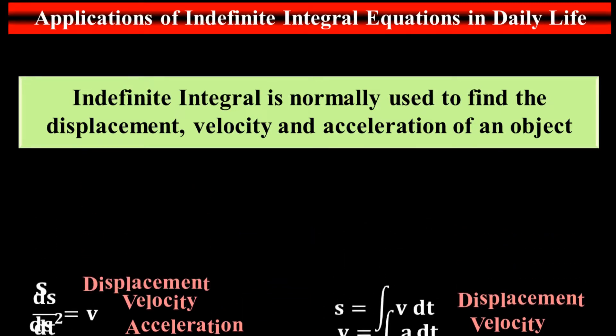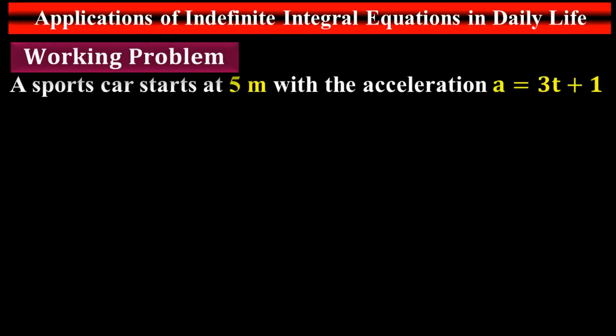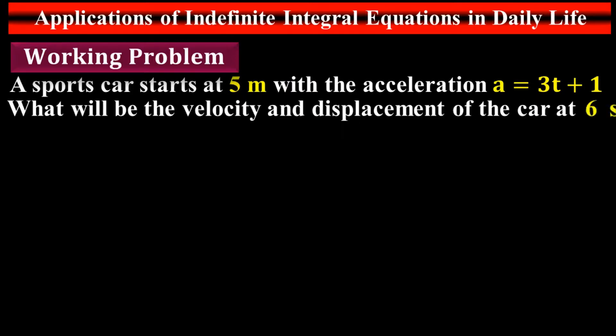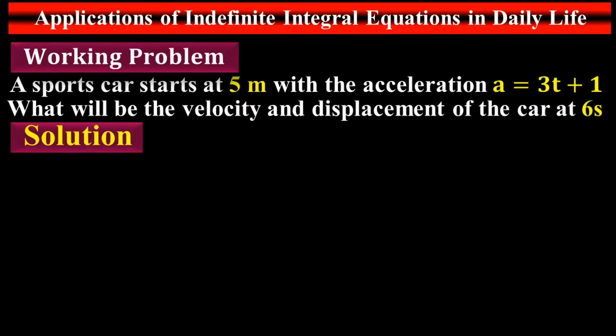Working problem: A sports car starts at 5 meters with acceleration a = 3t + 1. What will be the velocity and displacement of the car at 6 seconds? The car has an initial displacement of 5 meters and acceleration 3t + 1. We need to find the velocity and displacement after 6 seconds. Let's do it.